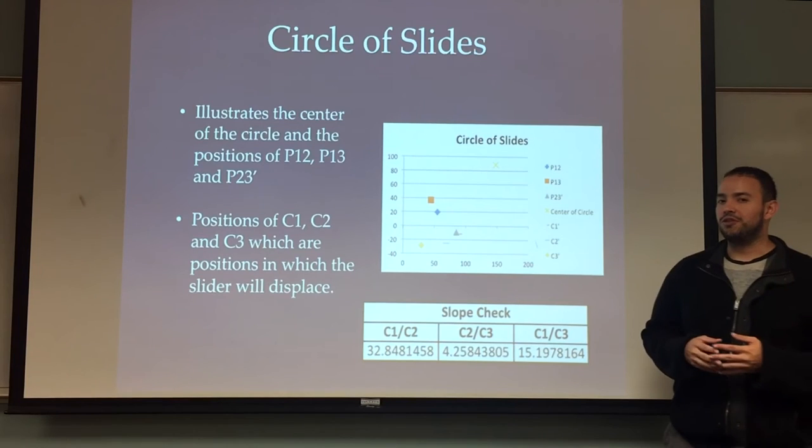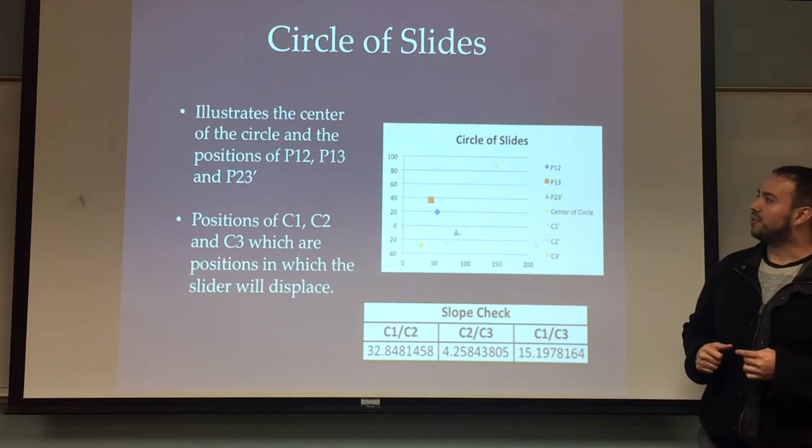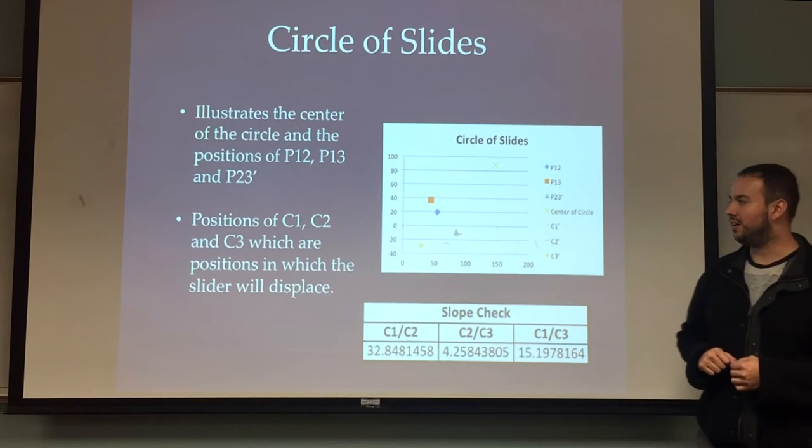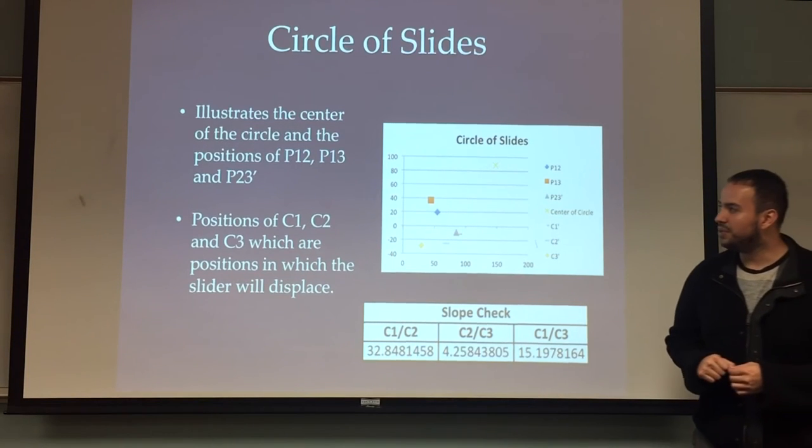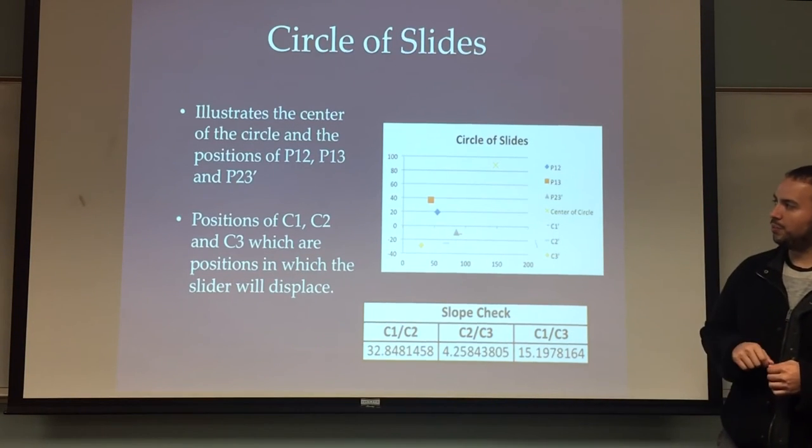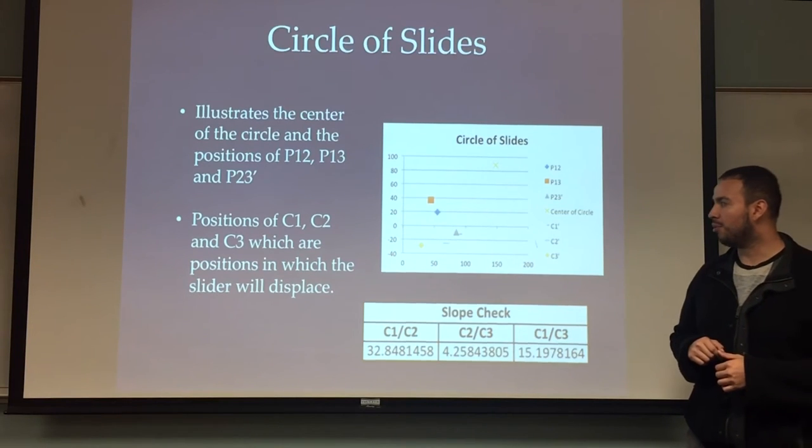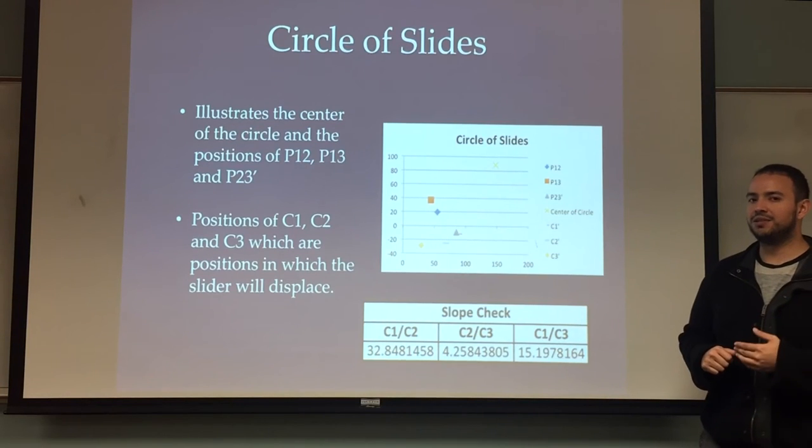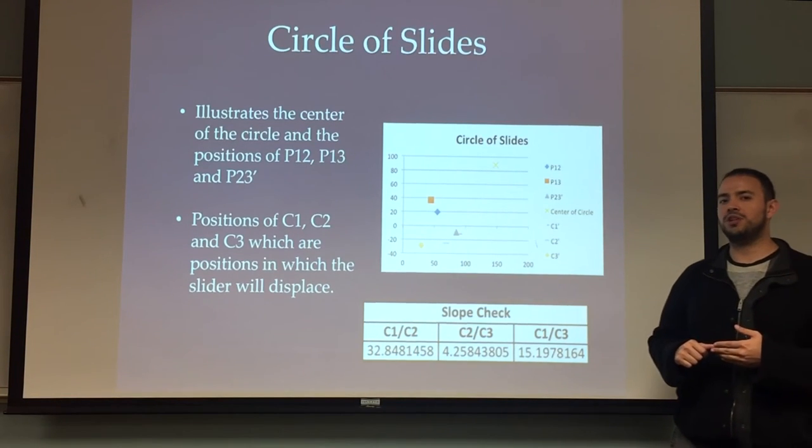So the circle of slides, what does it do for us? It illustrates the center of the circle for us as well as the pole positions. One thing I do want to highlight on the circle of slides is that P2,3, with the apostrophe here prime, P2,3 prime, is an image pole from P2,3.